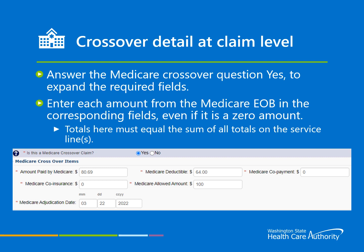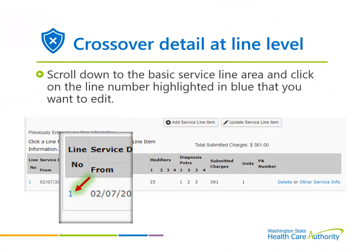Once the Medicare detail has been removed from the Other Payer sections on the claim form, you will need to answer yes to the required question: Is this a Medicare crossover claim? Every field with the red asterisk must be completed from the detail on the Medicare EOB. The totals here must equal the sum of all totals on the service lines. To add the Medicare crossover data at the service line section, scroll down to the basic service line area and click on the line number highlighted in blue that you want to edit.